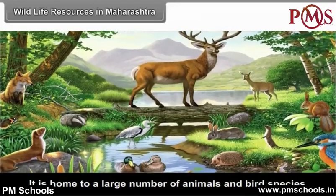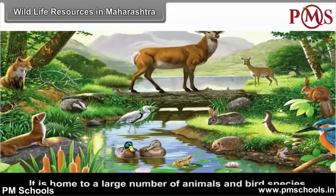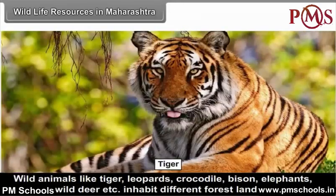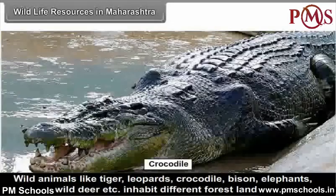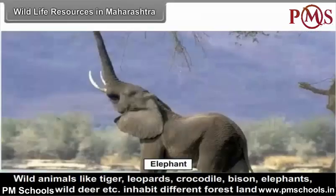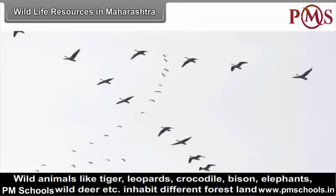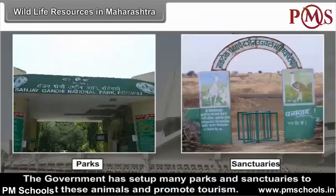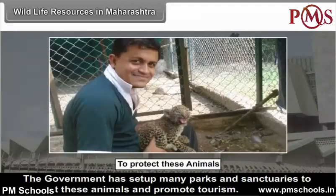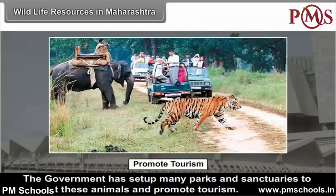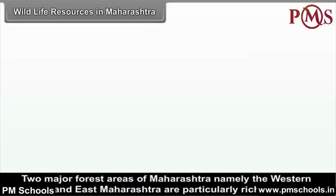Maharashtra is home to a large number of animal and bird species. Wild animals like tiger, leopards, crocodile, bison, elephants, nilgai, wild deer, etc. inhabit different forest lands in the state. The government has set up many parks and sanctuaries to protect these animals and promote tourism. Two major forest areas of Maharashtra, namely the Western Ghats and East Maharashtra, are particularly rich in wildlife.